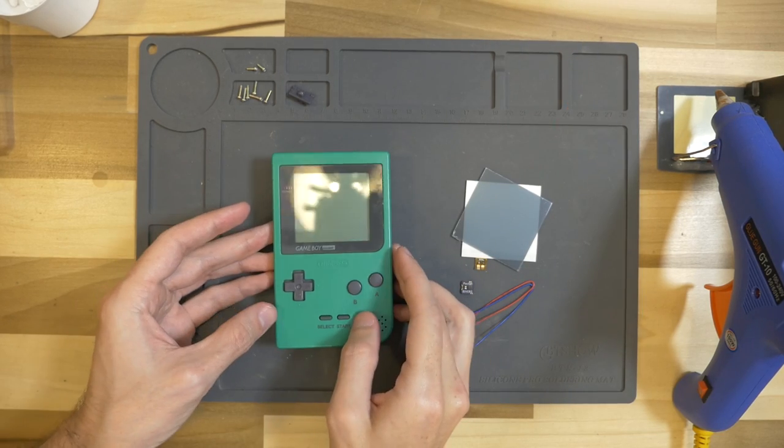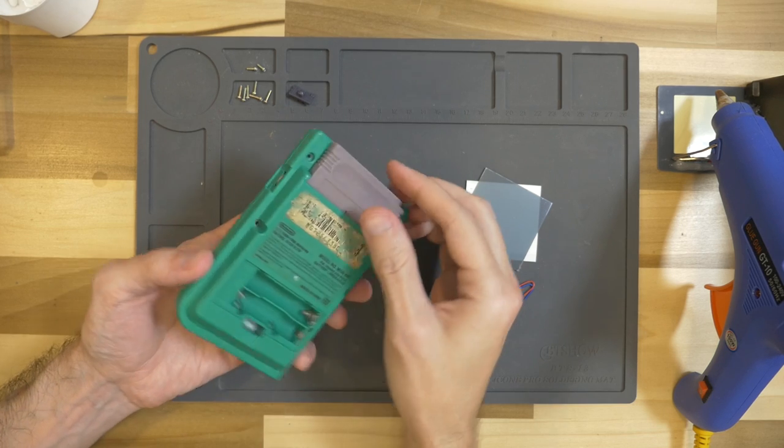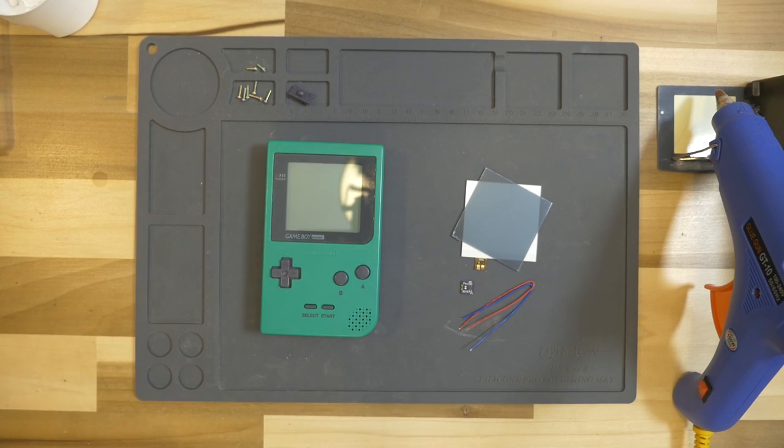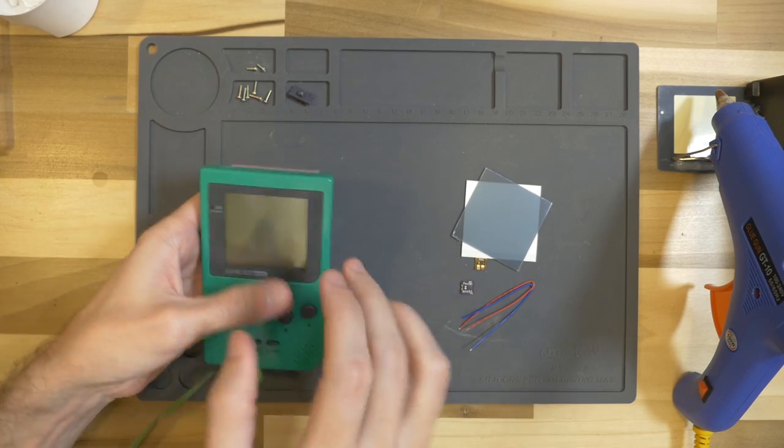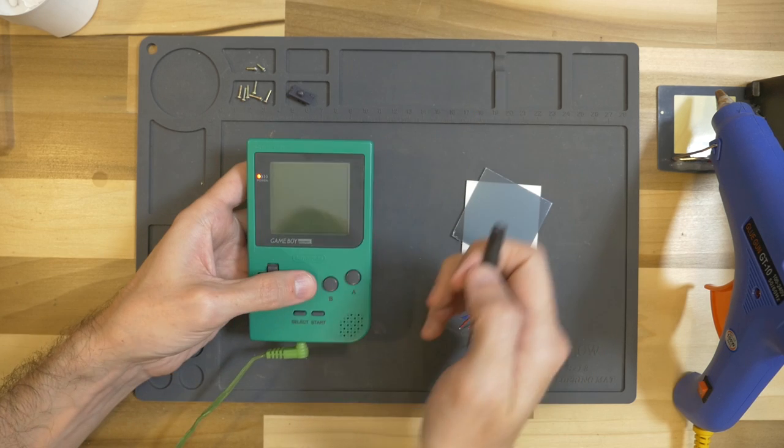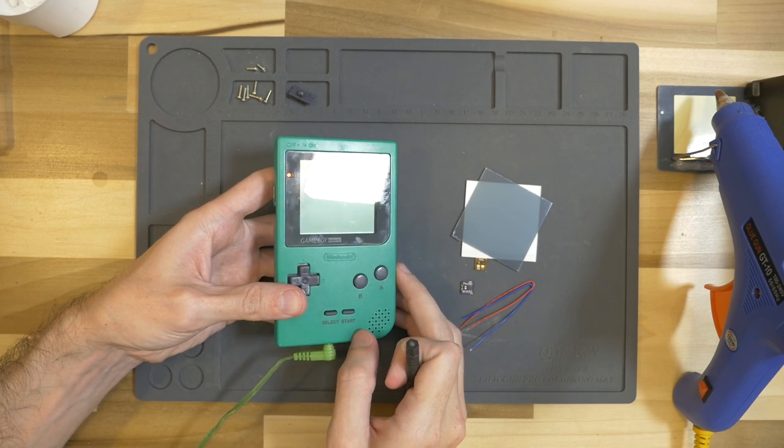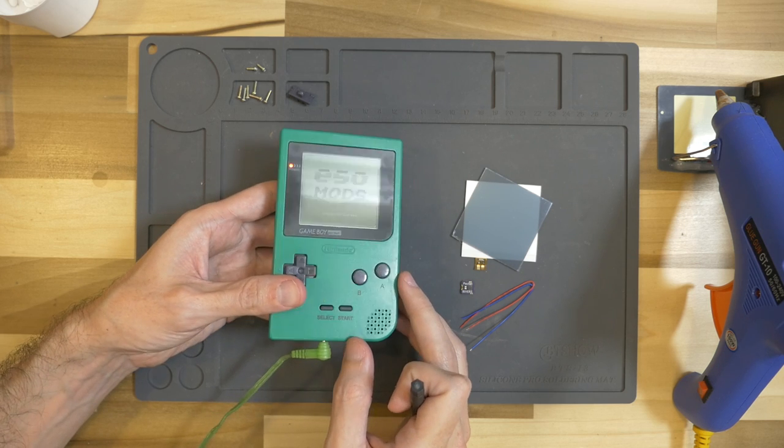Hey guys, Sean here. So today I'm going to be backlighting a Game Boy Pocket. I recently did a DMG, so I figured it was time to finally do a pocket. I already took the screws and power switch out, so this is what it looks like before. Not very bright at all because there's no backlight.